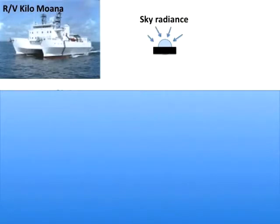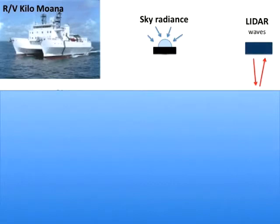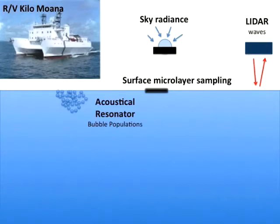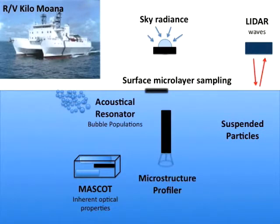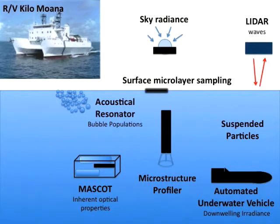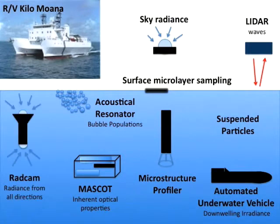On the Kilamoana, sky radiance was measured continuously along with wind, currents, and weather conditions. LIDAR was used to monitor the surface wave field, and a small boat was deployed to sample the surface microlayer. An acoustical resonator measured the bubble population just below the ocean surface, and daily samples at different depths investigated the chemical constituents of the water. Two separate instruments measured inherent optical properties down to 120 metres, a microstructure profiler made turbulence measurements, an AUV measured downwelling irradiance at seven wavelengths, and a camera called RADCAM measured radiance from all directions with depth.